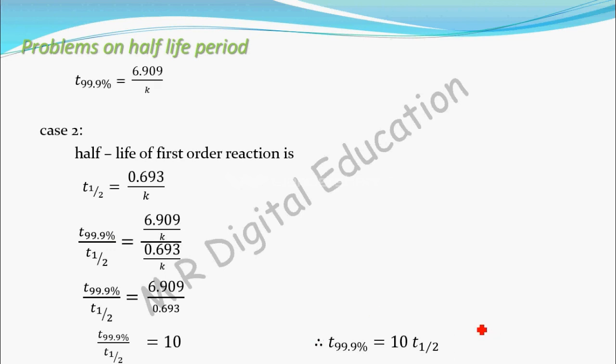That's the problem. To summarize: you have to form two equations — one for T99.9% and one for T-half. When you divide those two equations, you get this result. That's it. Thank you.